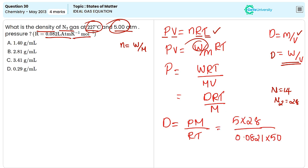Now, we can substitute all these values in this equation. So, we can write the final answer, that is equal to 3.41 gram per mole. So, from these options, the correct answer is option C.